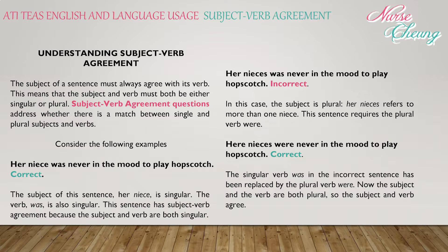Now let's look at an incorrect example: 'Her nieces was never in the mood to play hopscotch.' This is incorrect. The subject is plural — 'her nieces' refers to more than one niece — so the sentence requires the plural verb 'were.' The correct version is: 'Her nieces were never in the mood to play hopscotch.' The singular verb 'was' is replaced by the plural verb 'were,' so now both the subject and verb are plural and they agree.